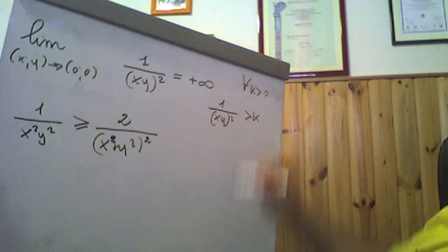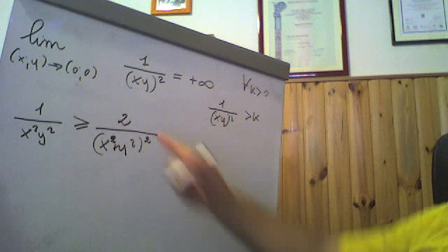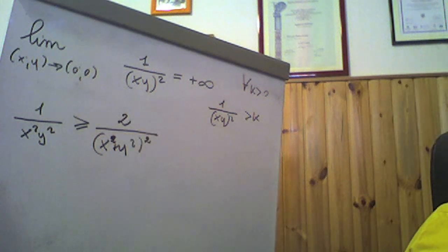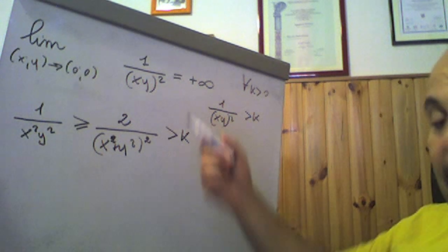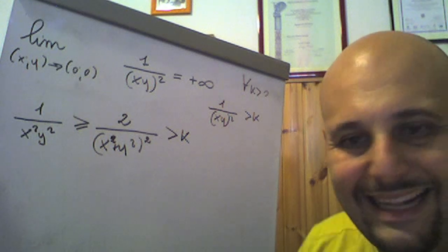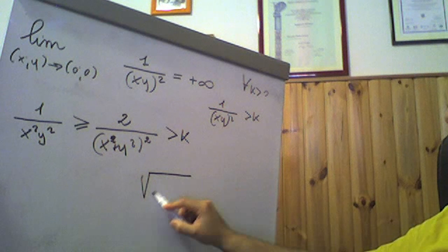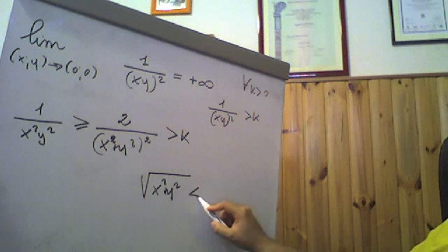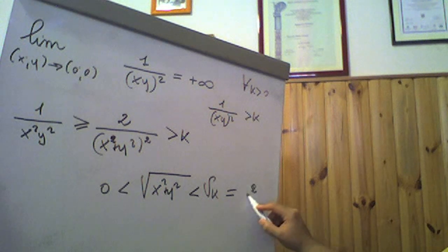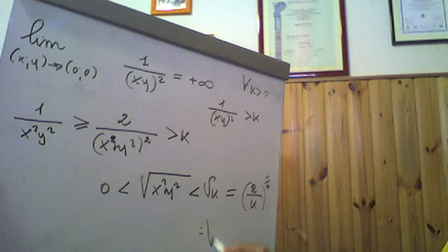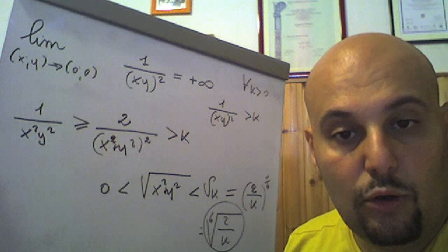Questa relazione è certamente verificata non appena 2/(x²+y²)² risulti essere maggiore di k. Visto che |P₀P| deve essere compreso fra 0 e delta k, questo è subito verificato: la radice di x²+y² è sicuramente compresa fra 0 e delta k, dove delta k in questo caso non è altro che (2/k)^(1/4), cioè la radice quarta di 2/k. Pertanto è facilmente dimostrata la nostra definizione.